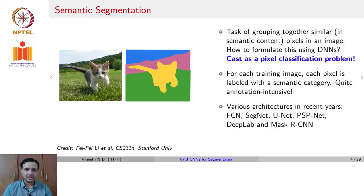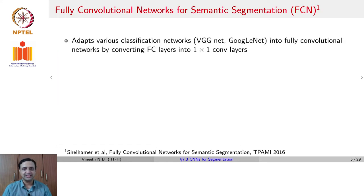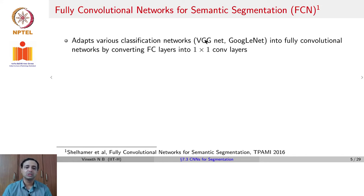There have been various architectures in recent years such as FCNs, SegNet, UNet, PSPNet, DeepLab, and Mask RCNN — we will cover each of them in this lecture. Starting with FCNs, or Fully Convolutional Networks for Semantic Segmentation, proposed in 2015–16, they adapted various classification networks such as VGGNet and GoogLeNet into fully convolutional networks by converting the FC layers into 1×1 convolutional layers.